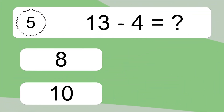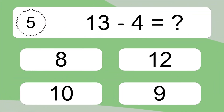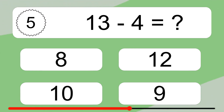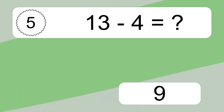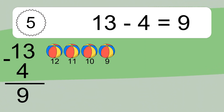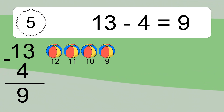13 minus 4 equals what? 13 minus 4 equals 9. Let's count it. 12, 11, 10, 9.